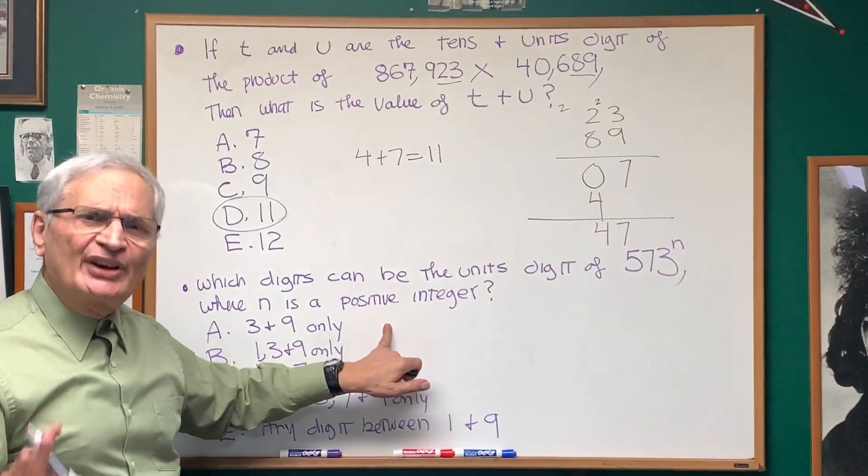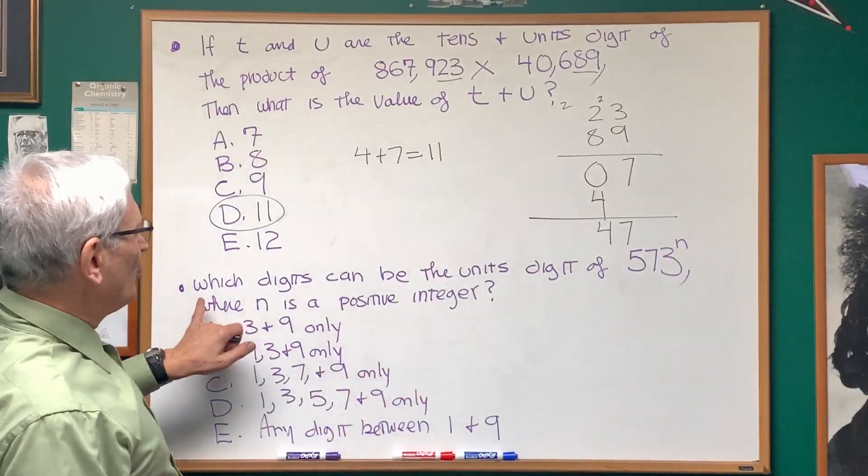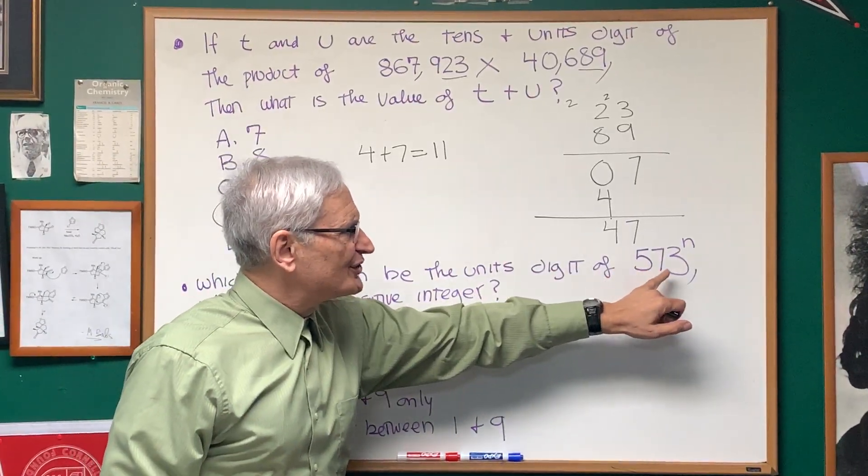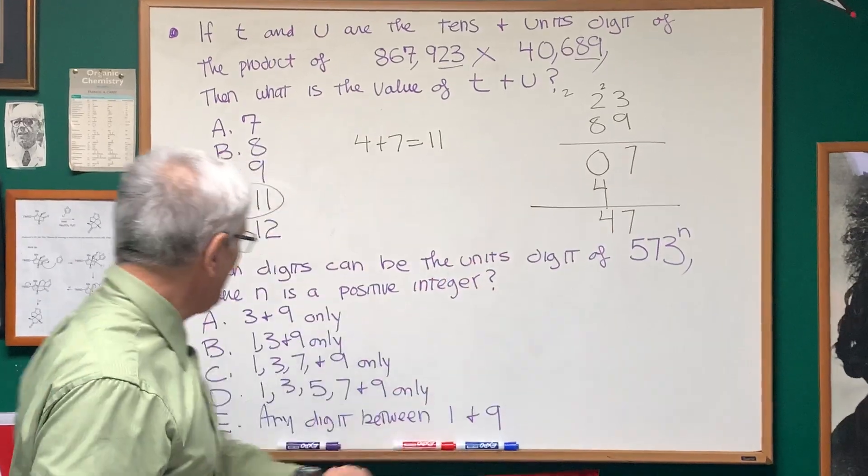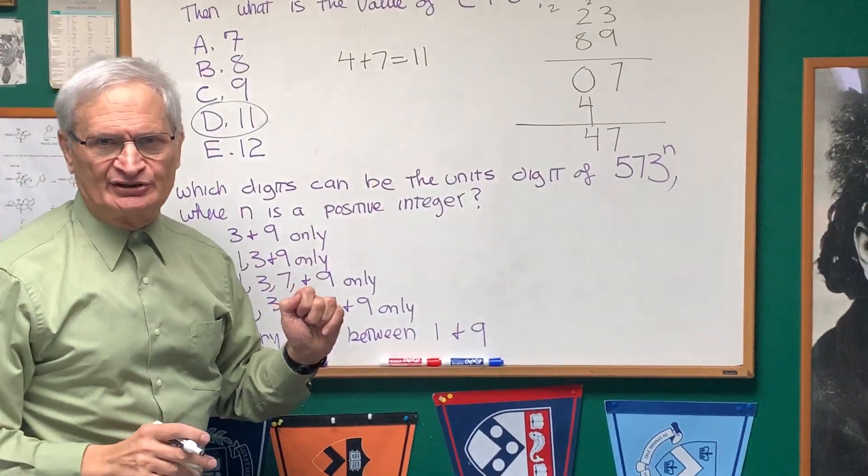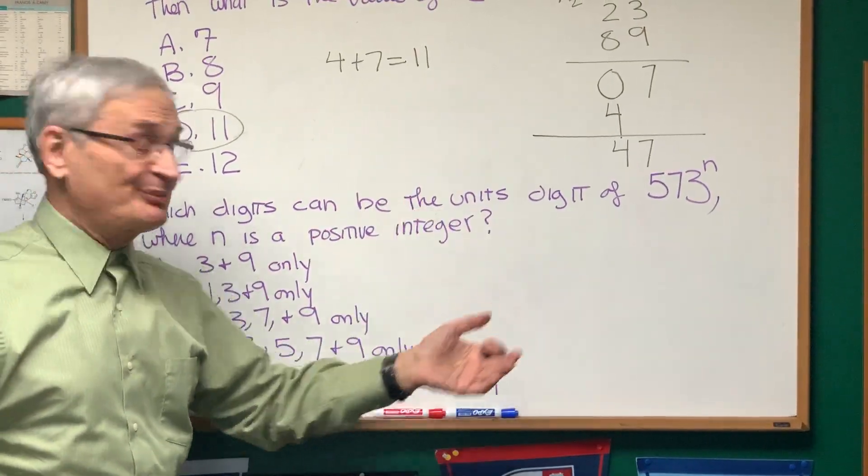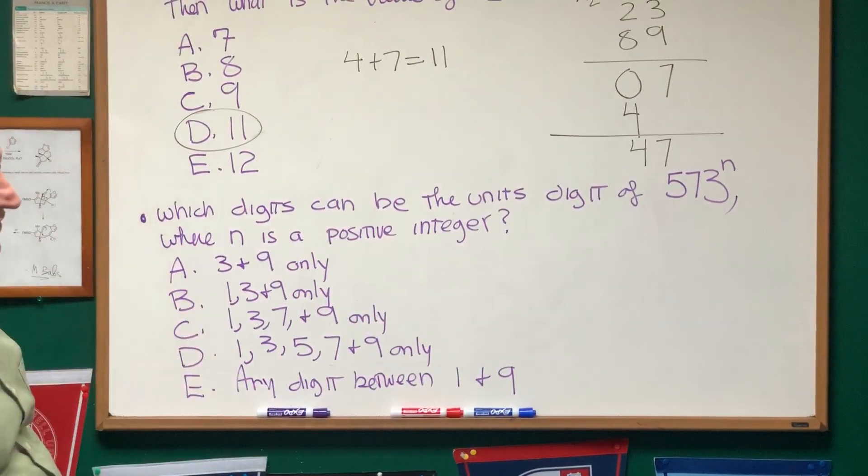Alright. Here's the second problem of a very similar type. Which digit can be the units digit, the units place of 573 to the nth power, where n is a positive integer? Okay, so we're talking about 573 to the first power, second power, third power, and we have a set of choices here.